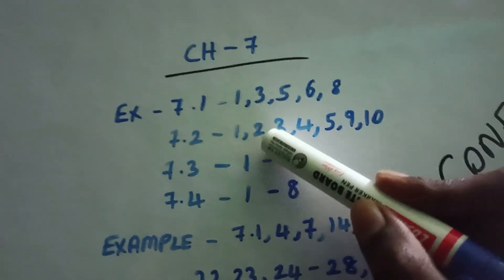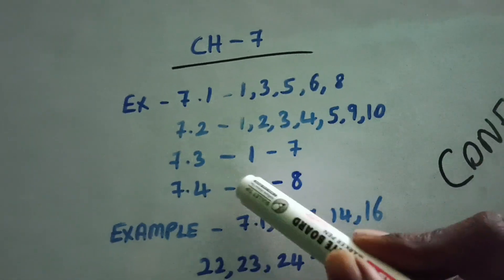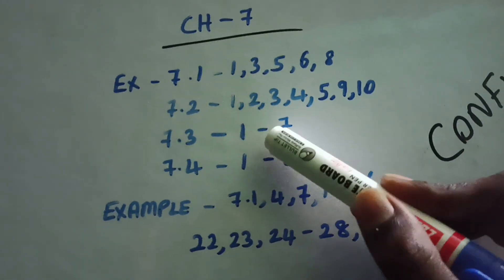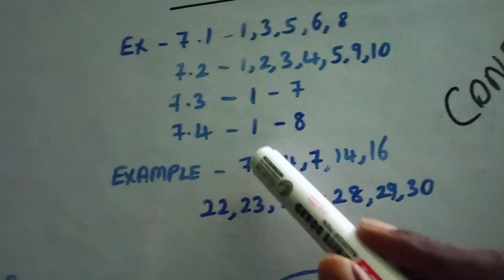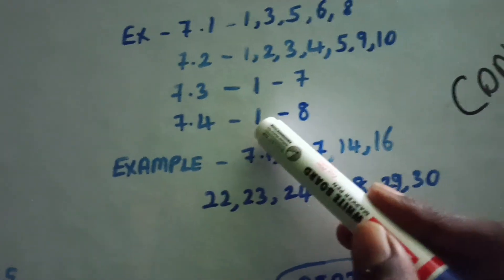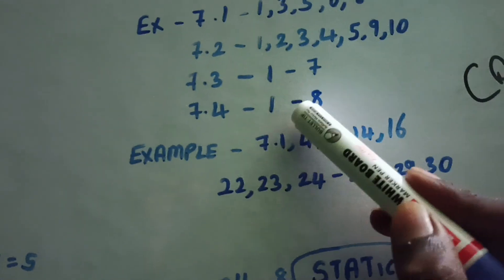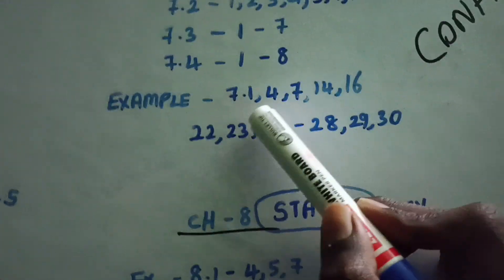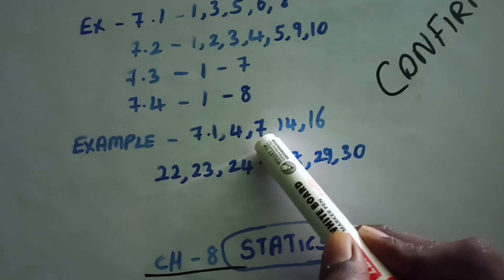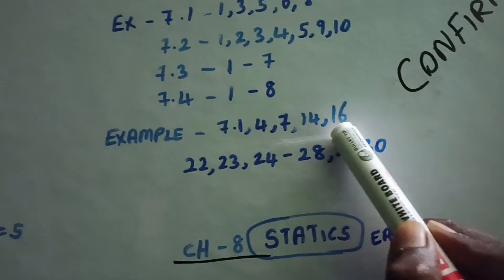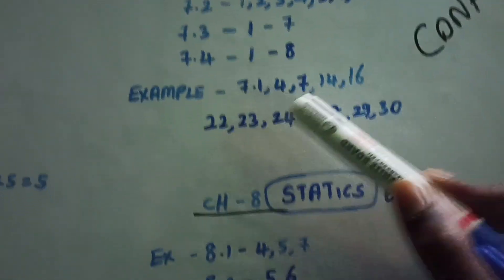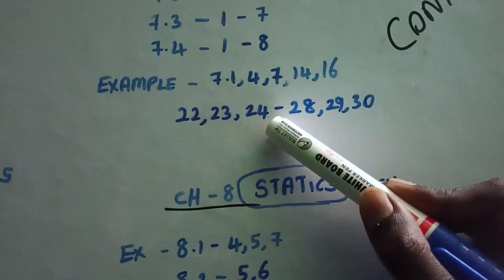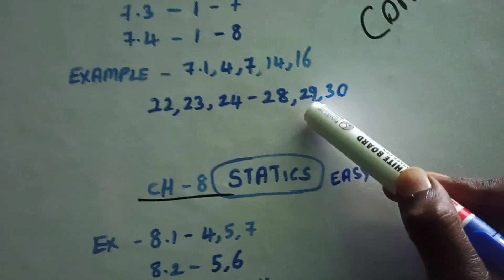Exercise 7.3 questions 1, 2, 3, 4, 5, 9, 10. Exercise 7.4 questions 1, 2, 3, 4, 5, 6, 7, 8. In the example sums: 7.1, 7.4, 7.7, 7.14, 7.16, 7.22, 7.23, 7.24, 7.25, 7.26, 7.27, 7.28, 7.29, 7.30.